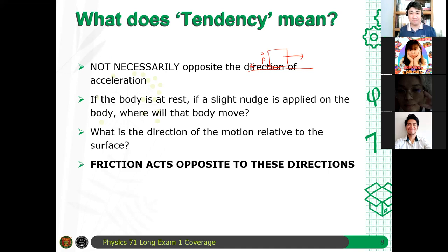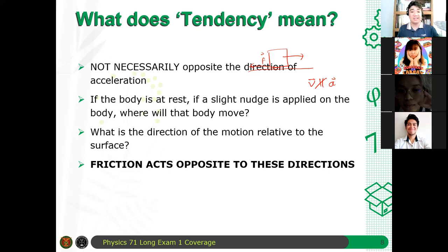Remember, the motion of an object and its acceleration are not necessarily the same direction. Velocity is not necessarily parallel to acceleration — from your study of motion in 1D, 2D, and 3D. Therefore, the mistake I made last time was saying that if you have a direction of acceleration, you just oppose that direction for friction. That's wrong. That's a mistake on my part, and I apologize for it. The correct statement is: whatever the direction of motion is, its opposite is the direction of the frictional force.